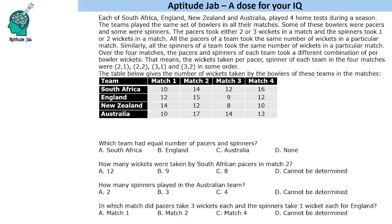In all four matches, the pacers and spinners of each team took a different combination of per-bowler wickets. That means the wickets taken per pacer or spinner of each team in the four matches were combinations like two-one, two-two, three-one, and three-two. So there are four possible combinations, and all these combinations happened in some order — we are not given the order.